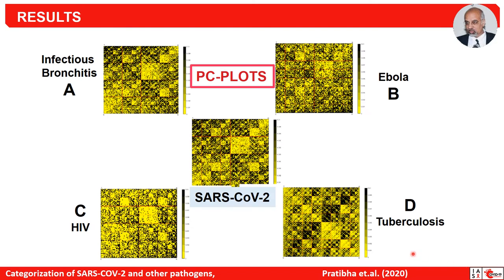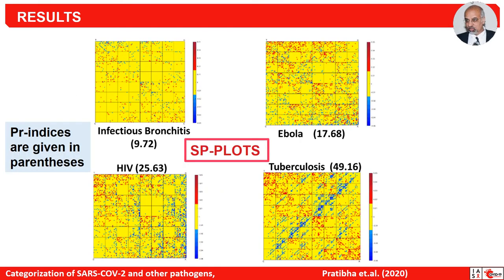Here we compare five different pathogens using percentage chaos game scale plots. Visual inspection itself shows remarkable dissimilarities from SARS-CoV-2. Infectious bronchitis is quite close to SARS-CoV-2, whereas tuberculosis is very far — almost opposite. Ebola is also a little close, but HIV is a little bit farther.